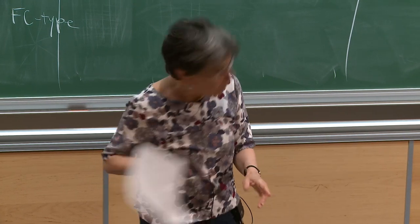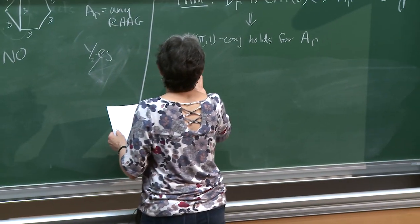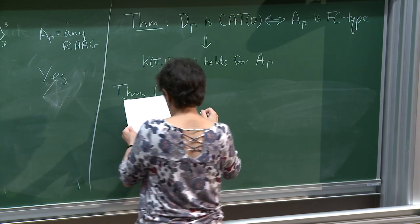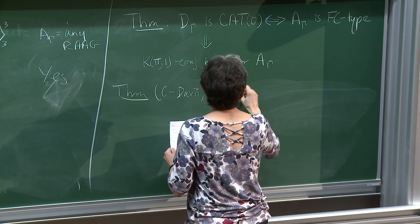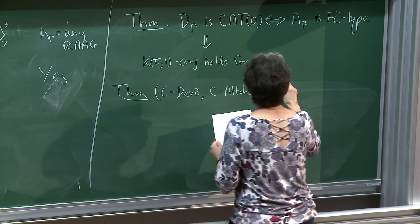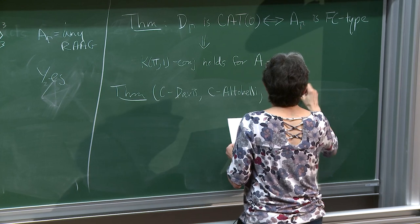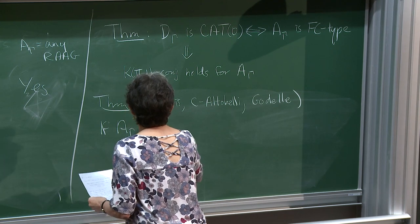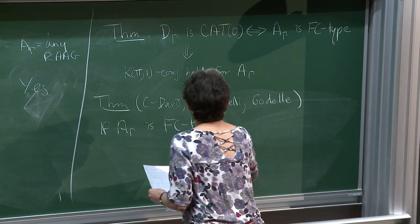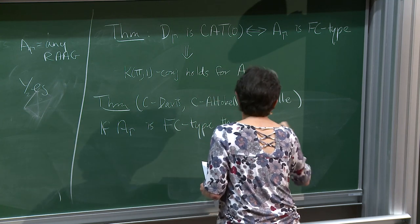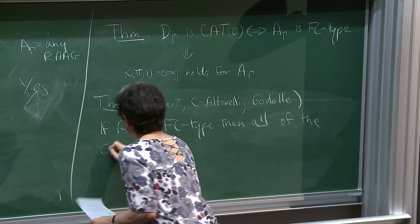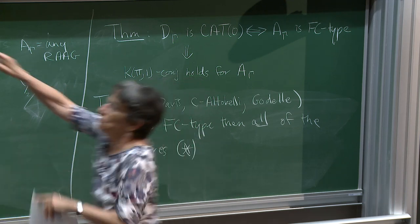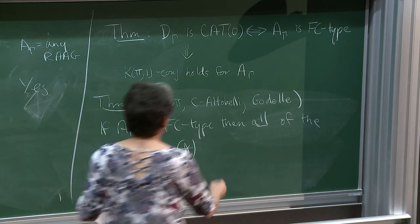It's better than that. Mike Davis and I, then one of my students Joe Altobelli, and then Eddie Goodell actually proved that if A(γ) is FC type, then all of the conjectures — that list of star conjectures — are true.